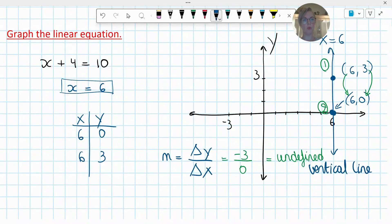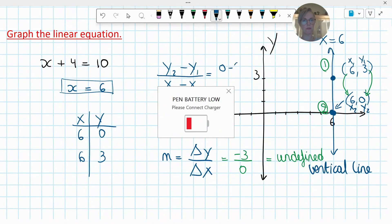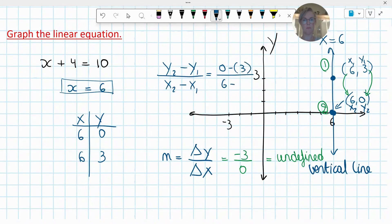Again, pick points - call this x1, y1, call this x2, y2. If you want to use the formula method, y2 minus y1 over x2 minus x1. So you have 0 minus 3 and then 6 minus 6.